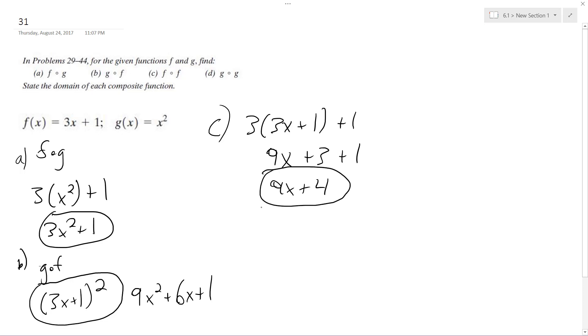Alright, and then our final part, it's g∘g. So we get quantity x squared squared, because we're plugging in g of x for g.